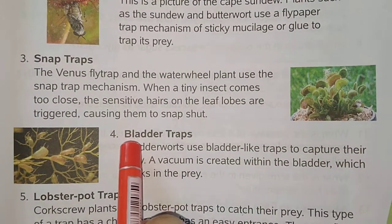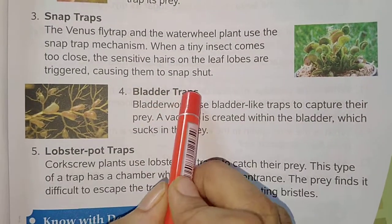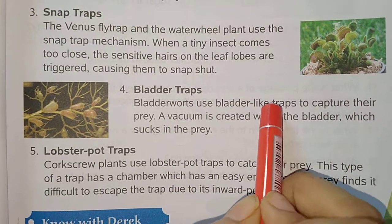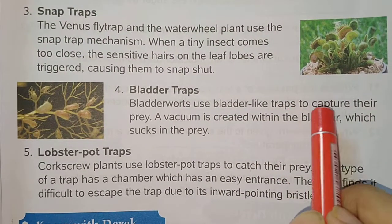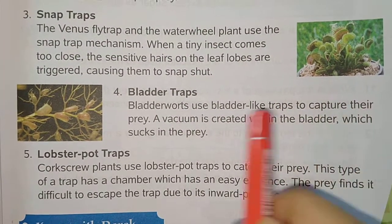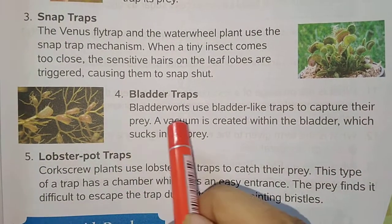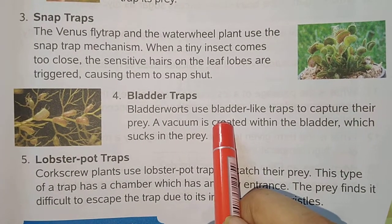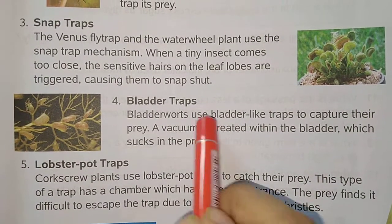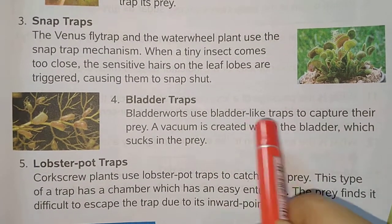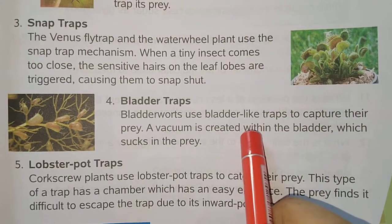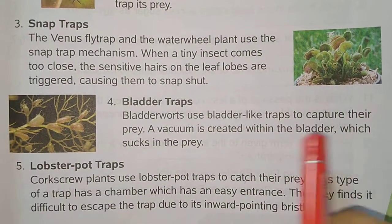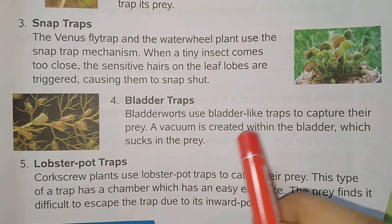Next is the bladder trap. Bladderwort uses the bladder trap to capture its prey. A vacuum is created within the bladder, which sucks the prey inside.